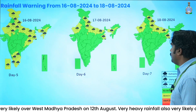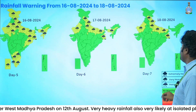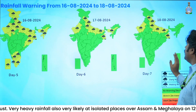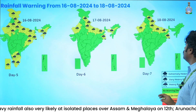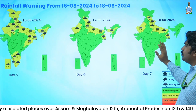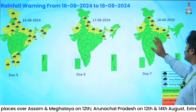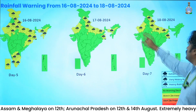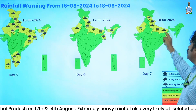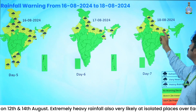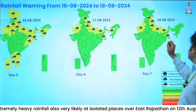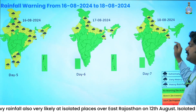For the Day 7 forecast valid for 18th August, there is no adverse weather warning issued over the rest of the country except west Rajasthan, Himachal Pradesh, Uttarakhand, Uttar Pradesh, Haryana, Chandigarh, Delhi, and also West Bengal.